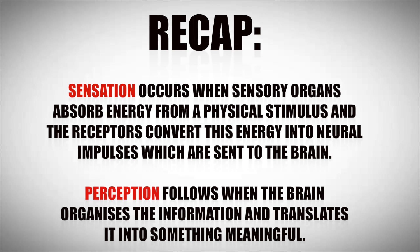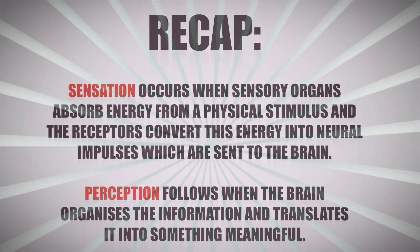Sensation occurs when sensory organs absorb energy from a physical stimulus and the receptors convert this energy into neural impulses which are sent to the brain. Perception follows when the brain organises the information and translates it into something meaningful.